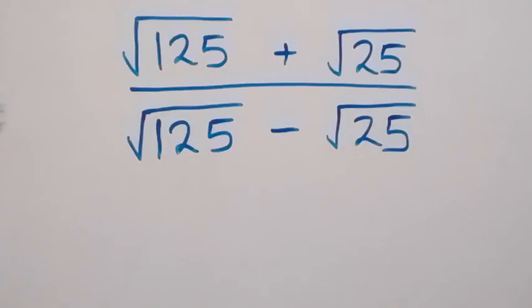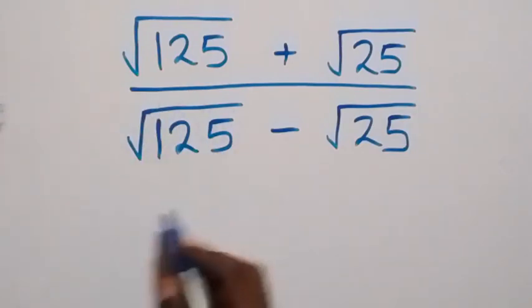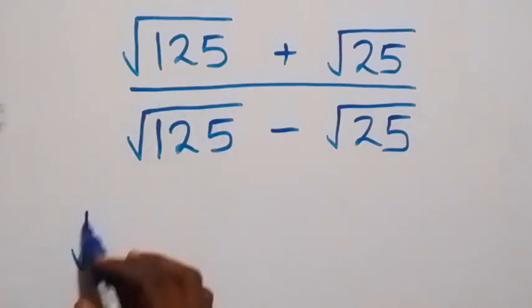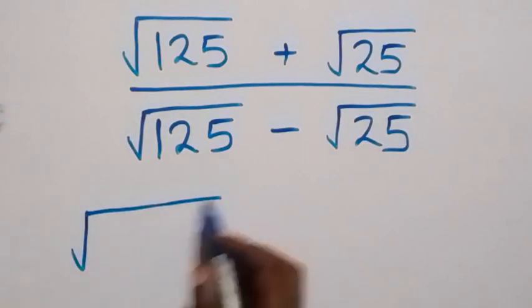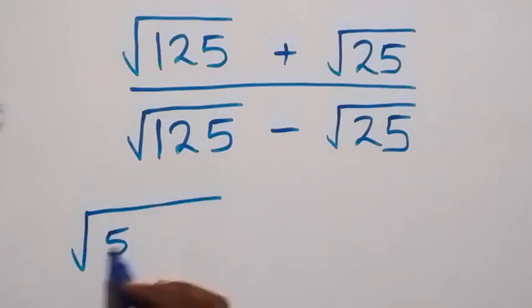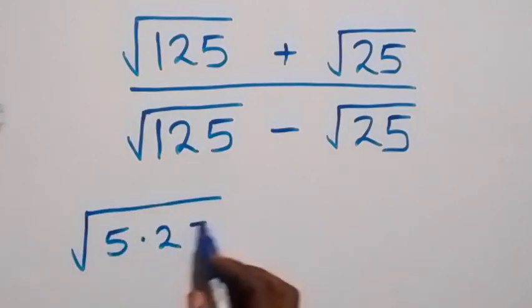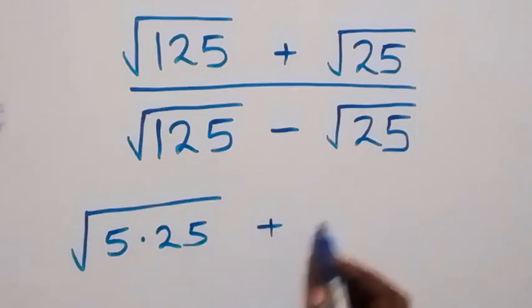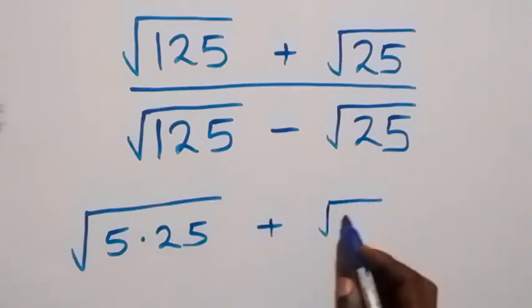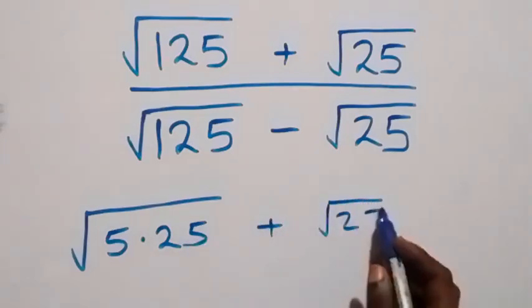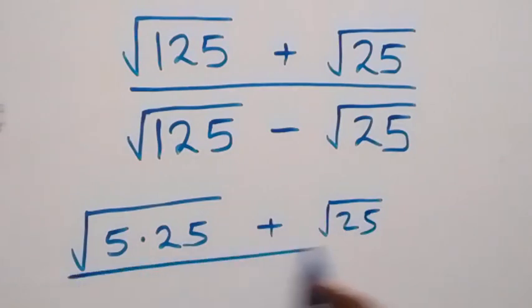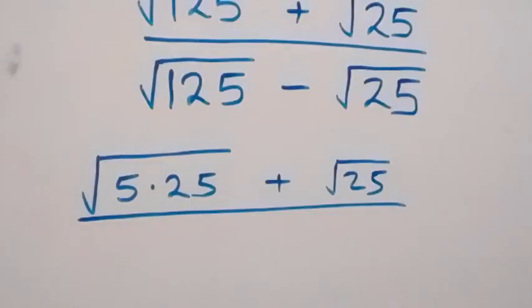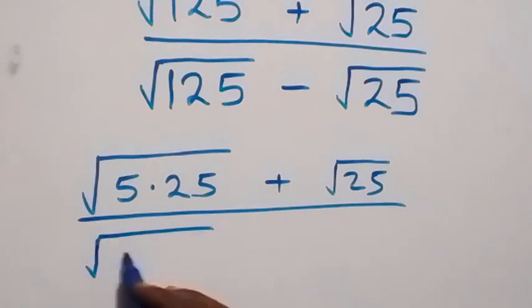Hello, you are welcome. How to solve this nice square root problem — let's use two methods. From here, the first one: we can rewrite this as square root of 5 times 25, then plus here we have root 25 divided by — here also we can write this as root 5 times...